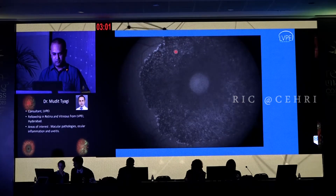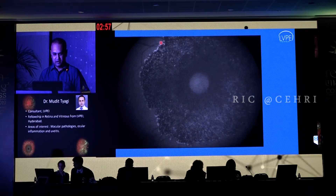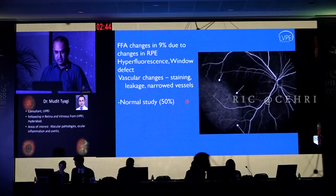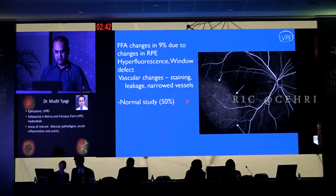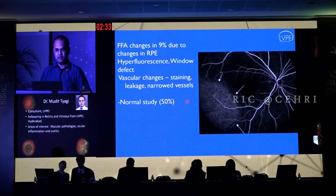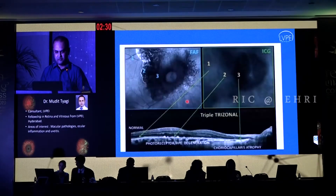This is another one of our patients where you see this hyper-autofluorescence, again this demarcation line, and this ring of hyper-autofluorescence with its characteristic distribution around the lesion seen in these cases of AZOOR. ICG reveals hypo-fluorescence areas around the lesion and in the peripapillary areas. FFA changes are seen in around 9 to 10% of cases, predominantly due to changes in the RPE, with hyper-fluorescence and window defects. Vascular changes might be seen in some cases, but 50% of patients may not have significant changes on FFA.